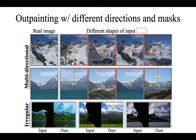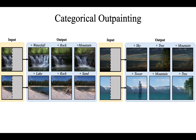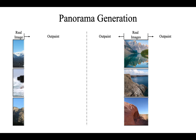We can even generate from irregular boundaries, as shown in the bottom row. Here are some results of categorical outpainting — the user can specify what category they want to see in the outpainting area, for example, a rock, a waterfall, or even a tower. Finally, by repeating the process iteratively, we can perform panorama generation.